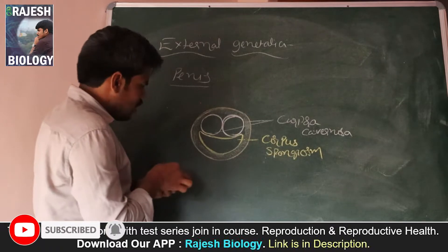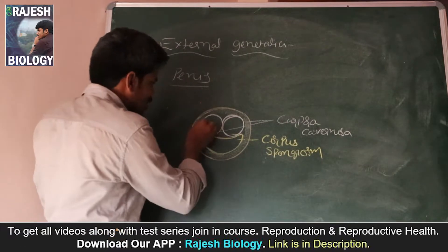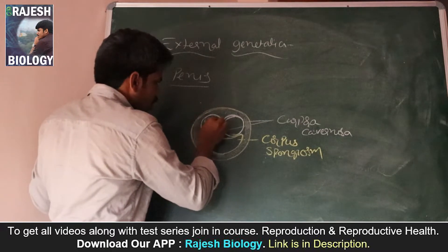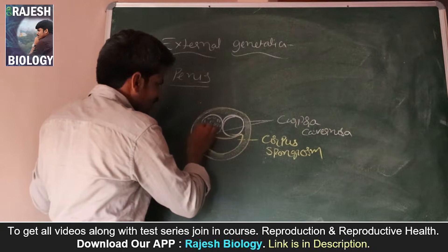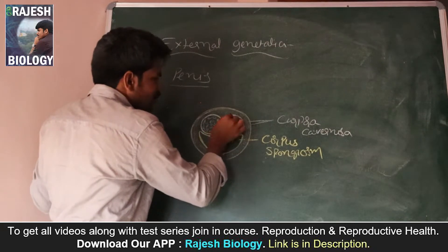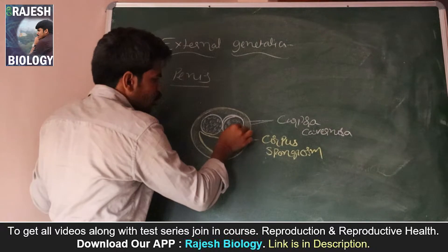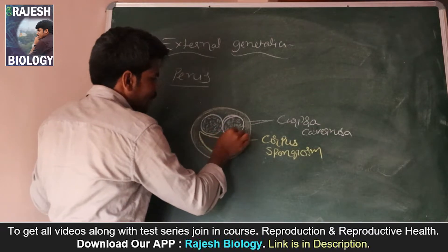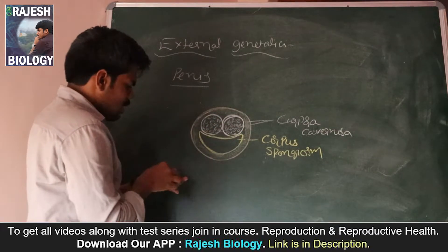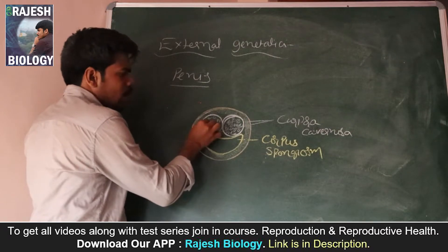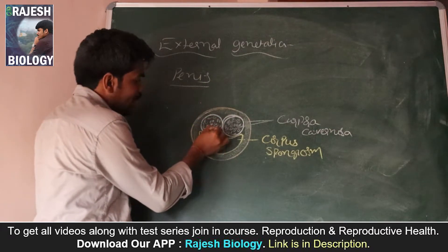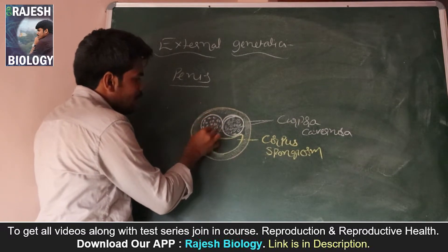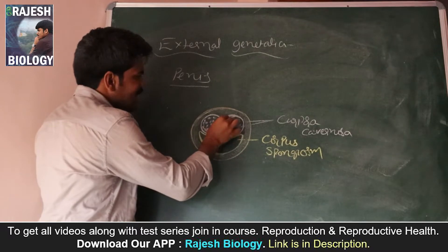Corpora cavernosa is a very specialized tissue. Inside the corpora cavernosa, there are many cavities — these are blood cavities. During normal times, these cavities are empty, but at the time of erection during copulation, these cavities are filled with blood. When these cavities are filled with blood, the penis gets erected, and it is helpful for insemination.